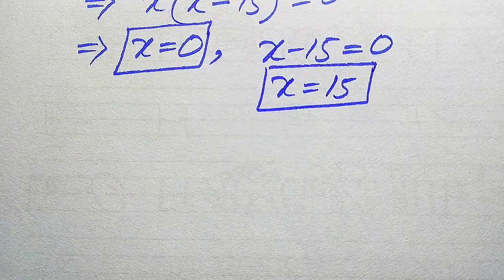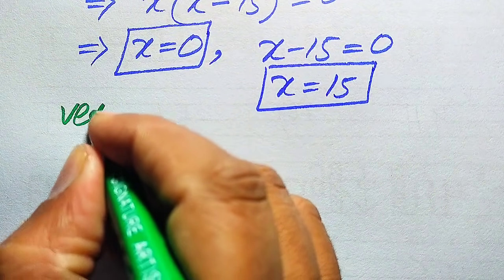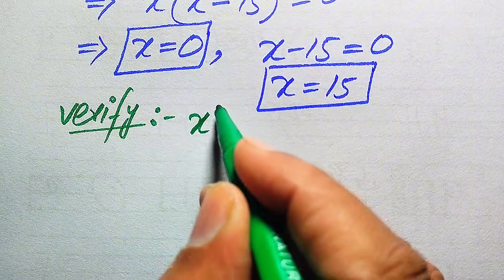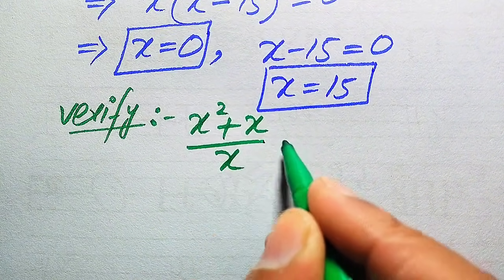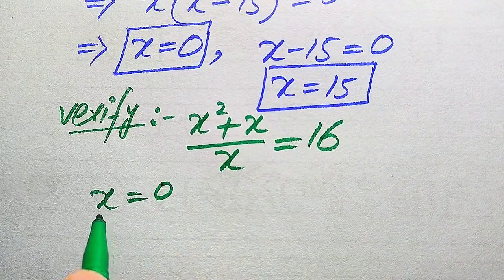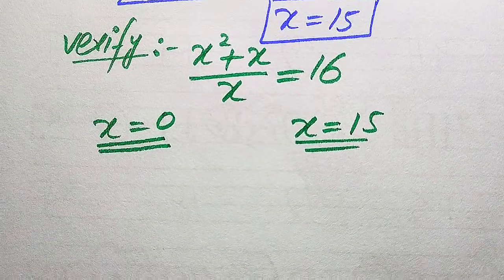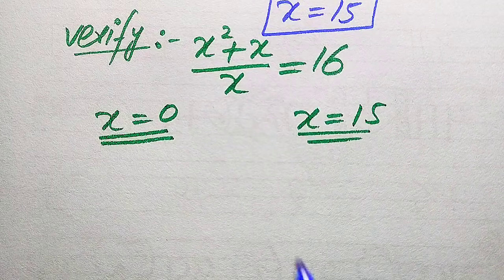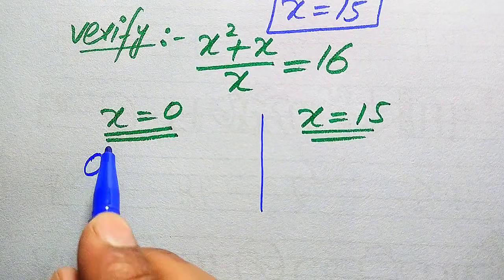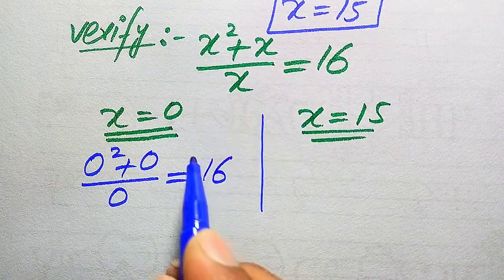So in the first method we get two roots. Now we verify whether these values are solutions or extraneous roots. We substitute x equals 0 into the original equation: 0 squared plus 0, all divided by 0, equals 16 or not?